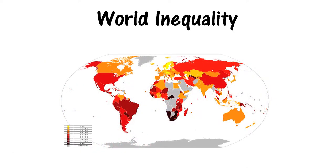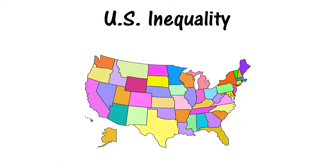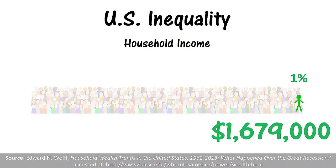Inequality can also be seen within countries. This map shows each country's degree of inequality as measured by the Gini coefficient. The darkest red color indicates countries with the highest degree of inequality, while the light yellow color indicates countries that have the highest degree of equality.